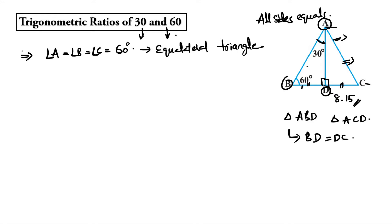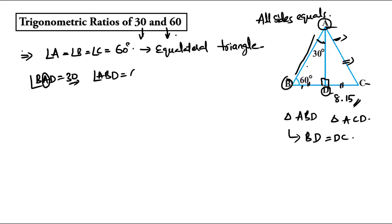Angle BAD is equal to 30 degrees, which is already given. This forms a right angle triangle. So angle BAD is 30 degrees, and angle ABD is equal to 60 degrees.